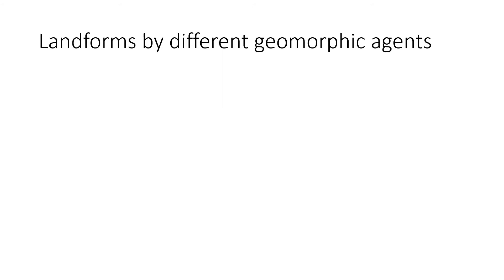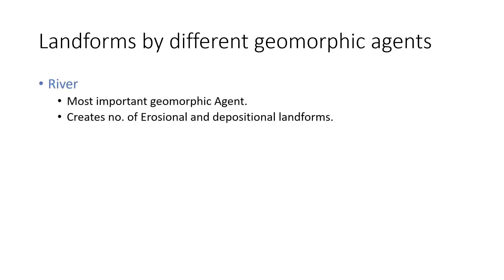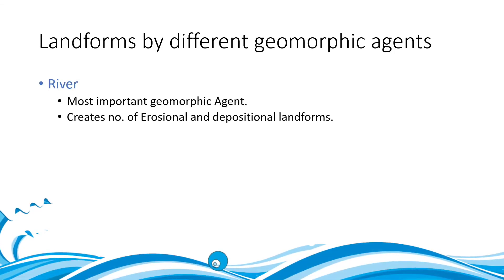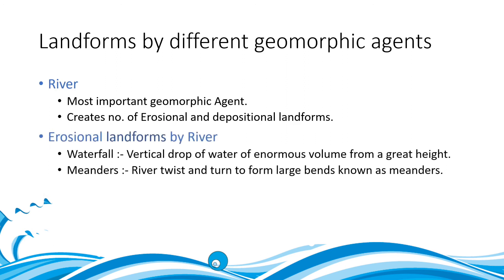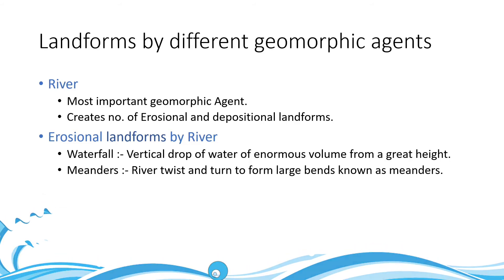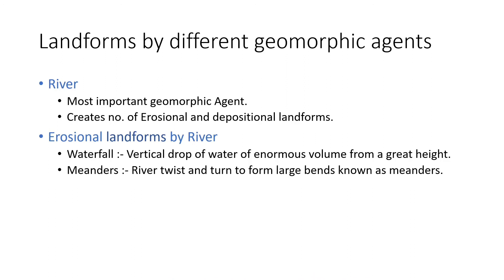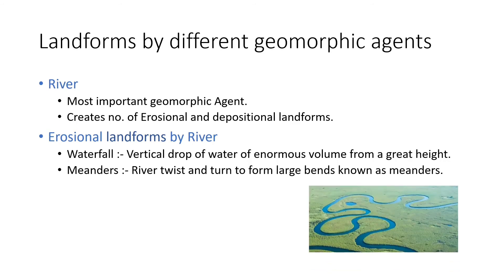River is the most important geomorphic agent — it creates a number of erosional and depositional landforms. Erosional landforms created by rivers include waterfalls and meanders. Waterfalls are vertical drops of water of enormous volume from a great height. Meanders are twists and turns by the river — when the river enters a plain area, it twists and turns forming large bends. This forms a snake-like pattern. Over time, erosion and deposition along the sides cause the loop to cut off from the river, forming an oxbow lake.